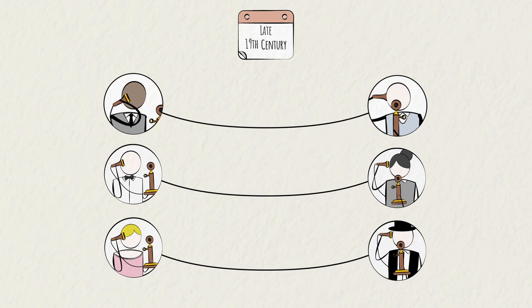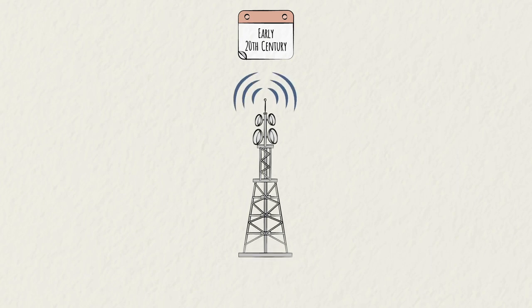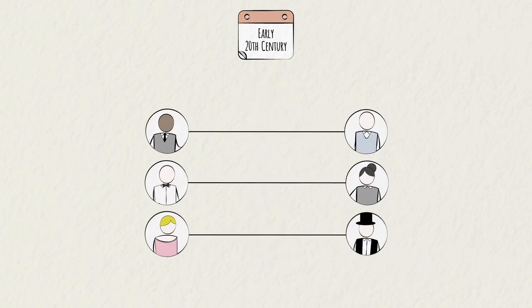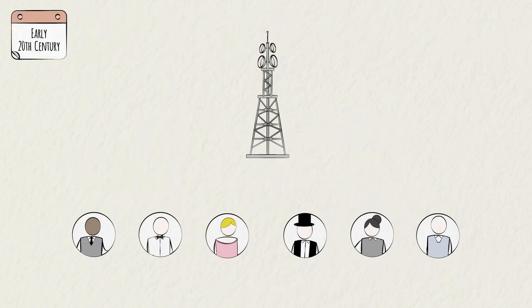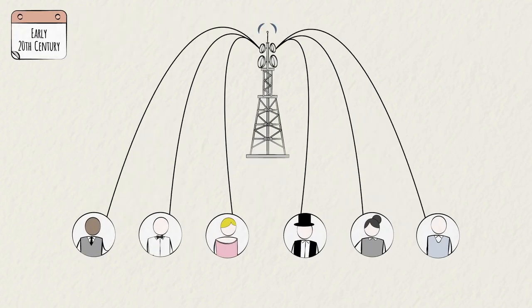The next phase of telecom came in the early 20th century, with the advent of radio waves. While prior technologies only sent information from point A to point B, radio waves allowed information to be broadcast out to many endpoints simultaneously. Thousands of people spread across the country could now receive the same information at the same time.